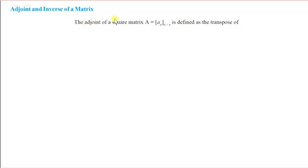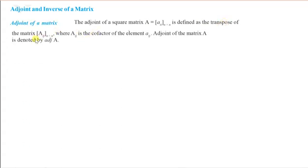The adjoint of a square matrix A = [aij] of order n×n is defined as the transpose of the matrix [Aij], where Aij is the cofactor of the element aij. We have previously studied cofactors of different elements, so we define the adjoint as the transpose of the cofactor matrix.